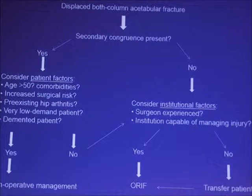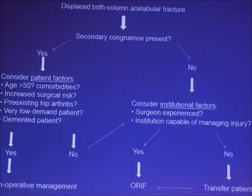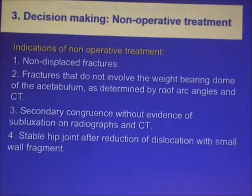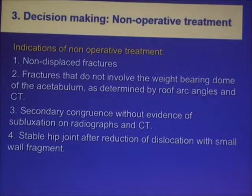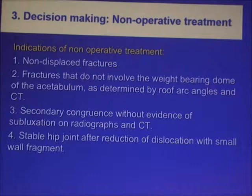Regarding both-column fractures, we have what is called secondary congruity. If present, we again consider patient and institutional factors to decide between open reduction internal fixation and conservative treatment. The decision for non-operative treatment may be taken in non-displaced fractures, fractures not involving the weight-bearing dome when roof arc angles exceed 45 degrees in all views, secondary congruity without subluxation, and when the hip is stable after reduction with a small wall fragment and stress views show no re-dislocation.